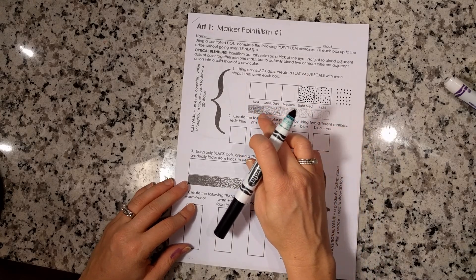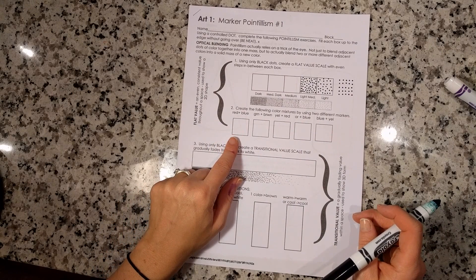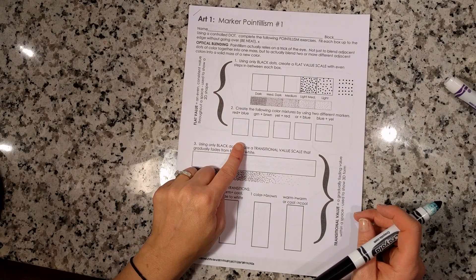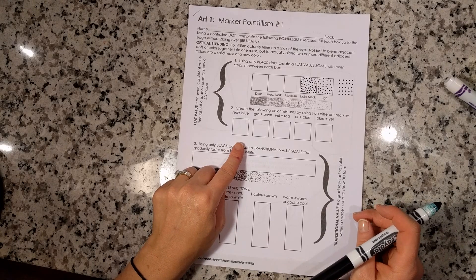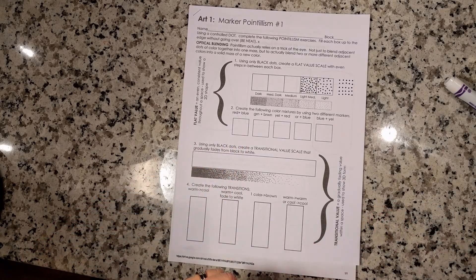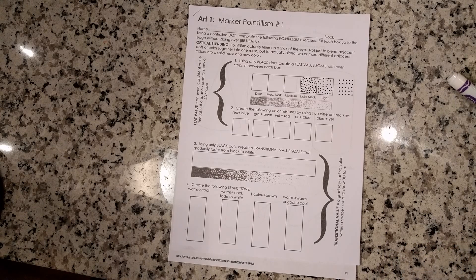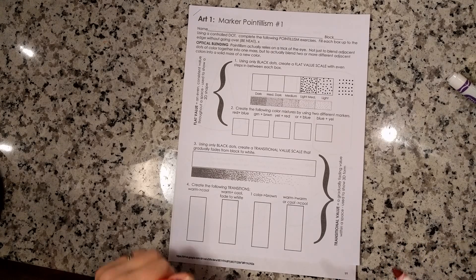I'm generally trying to match the examples underneath. Then I'm going to work on optical blending, which is really the crux or the heart of pointillism. Pointillism is when you take those two different colors and put them side by side, and they're going to create a new color when your eye blends them together.